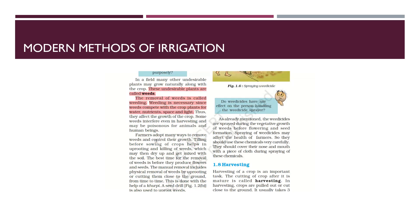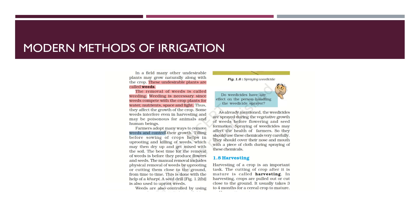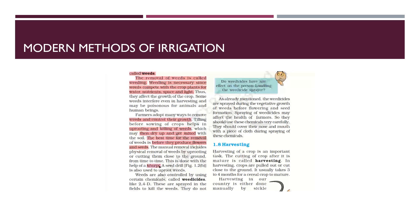Farmers adopt many ways to remove weeds. Tilling before sowing the crops helps in uprooting and killing the weeds, which then dry up and get mixed into the soil. The best time for weed removal is before they produce flowers and seeds, because once they produce flowers and seeds they keep increasing the weed population. We can use a khurpi to physically remove weeds by uprooting or cutting them from time to time.